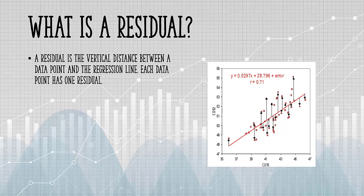If the point is above the line of best fit, it's positive, and below the line of best fit, it's negative.